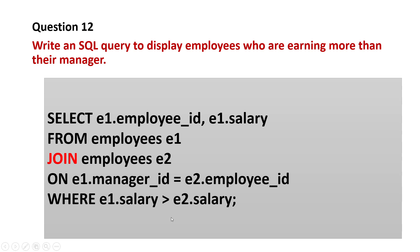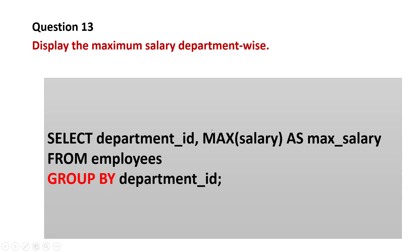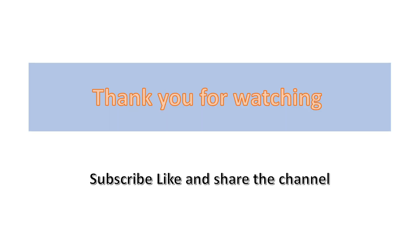Question: Display the maximum salary department-wise. One approach uses GROUP BY: SELECT department_id, MAX(salary) AS max_salary FROM employees GROUP BY department_id. Another approach uses DENSE_RANK: SELECT * FROM (SELECT e.*, DENSE_RANK() OVER (PARTITION BY department_id ORDER BY salary DESC) AS rnk FROM employees) WHERE rnk = 1. Both return the maximum salary per department. Thank you for watching — please subscribe, like, and share the channel.